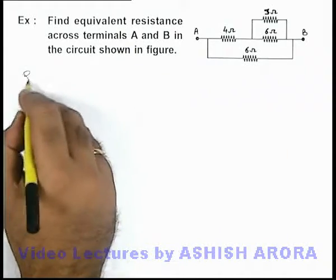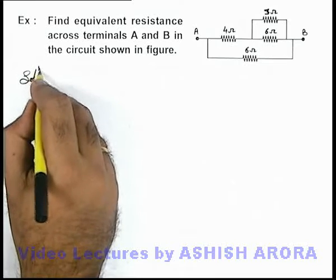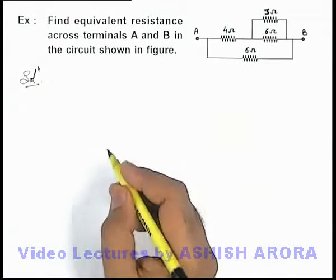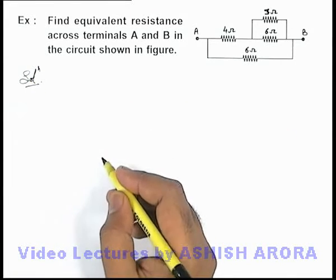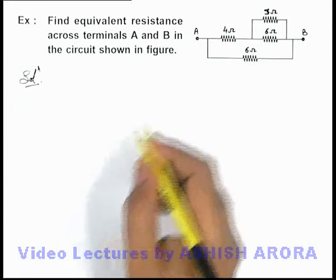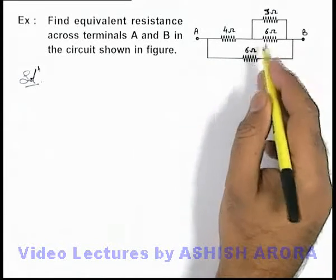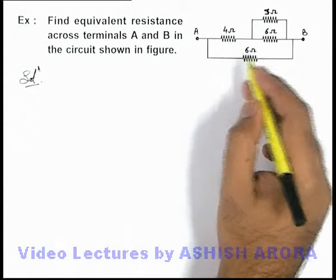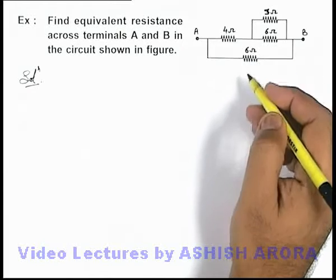Here we can see we are given with 4 resistances connected in a group combination. And to find out the equivalent resistance across A and B, we can reduce the circuit in form of a single resistance by using parallel and series combination.